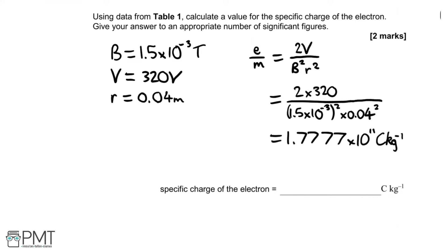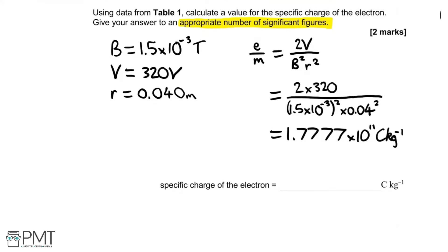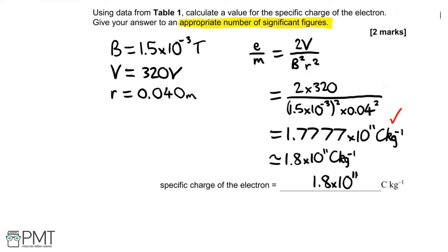However, this is not the correct number of significant figures. Our answer needs to be to two significant figures. Even though the radius was written as 0.04 metres, it's actually 0.040 metres because in the table it was given as 4.0 centimetres — also to two significant figures. So we need to give 1.8 times 10 to the 11 coulombs per kilogram. Your first mark is for correctly calculating the value by substituting in from the question, and your second mark is for using two significant figures.